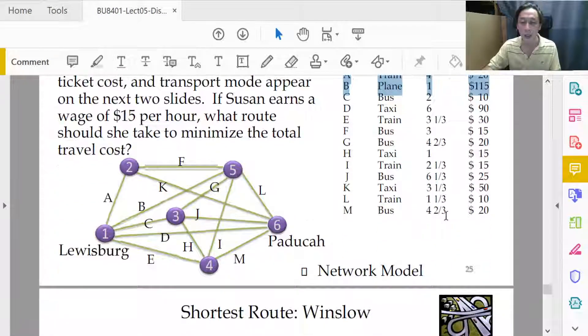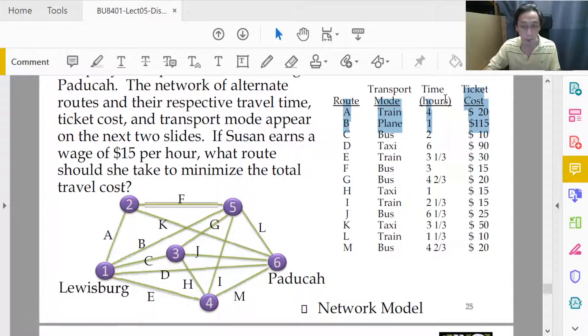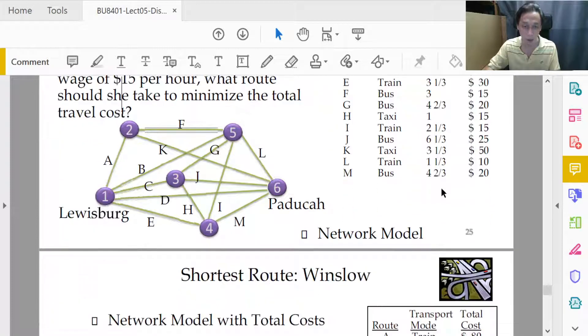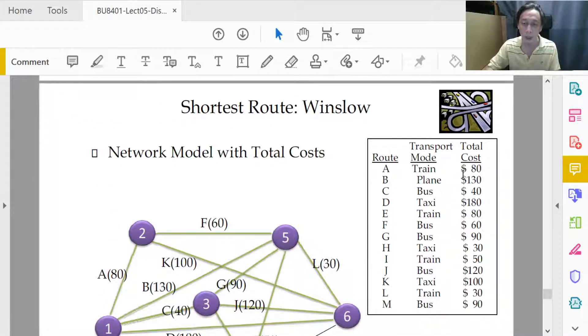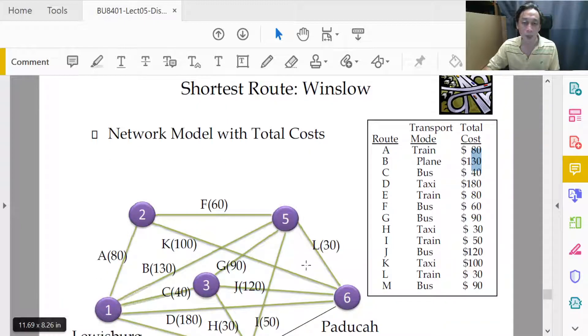What we need to do is to pre-process the costs by adding ticket costs to $15 times the variable hourly costs. We end up with a total cost of taking each mode of transport, whether by taxi, bus, plane, or train for a particular route. We have this table here.